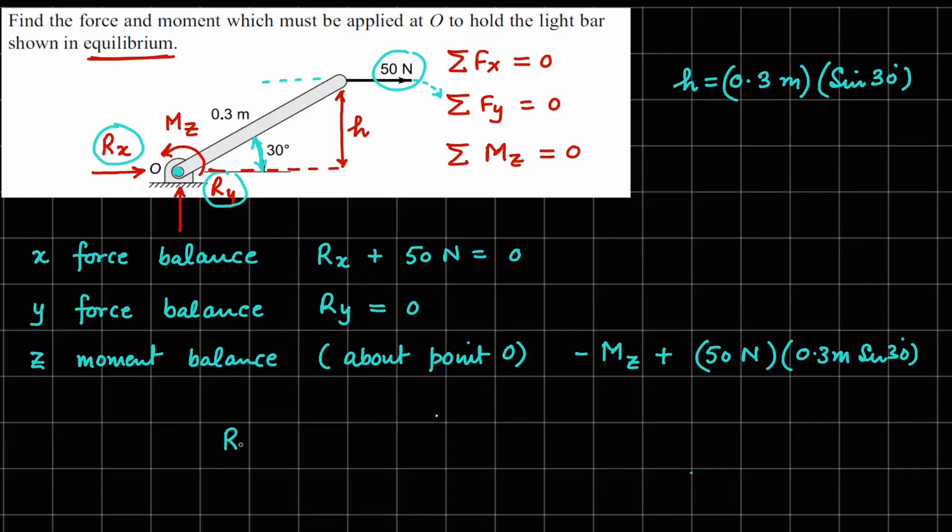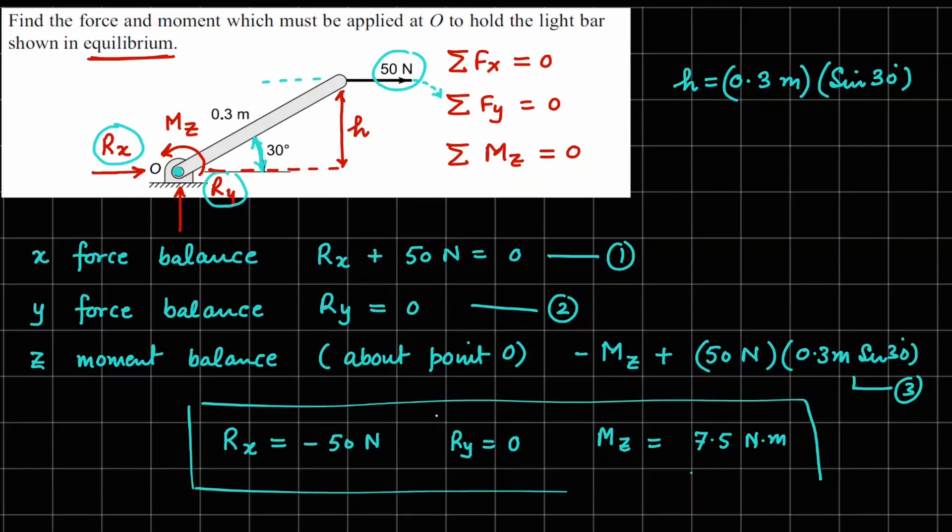So if I solve these equations, I can directly find out from the first equation, which is this one, Rx value is minus 50 newtons. Ry value comes from your second equation and this is equals to 0. And Mz value from the third equation can be calculated as 7.5 newton meter, and this is the final answer to this problem.